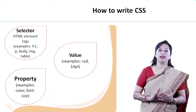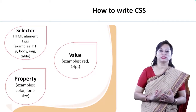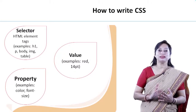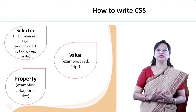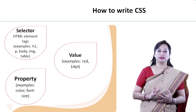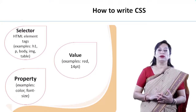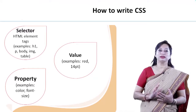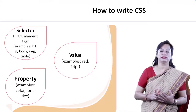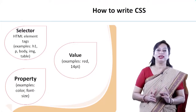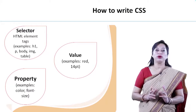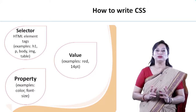First of all, we have to include a selector. These are HTML element tags like h1, p, body, img, table, etc. After that, we include a property like color, font size, and background color. After that, we include the value of the property, like red or 14pt. These are values of the property.